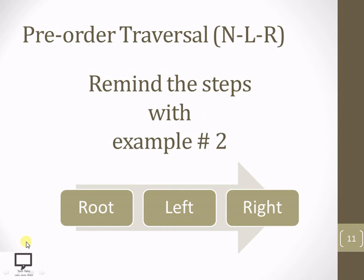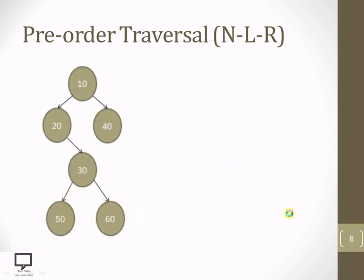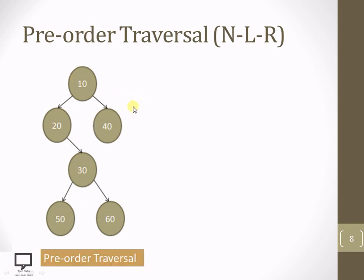Now let's move to Example 2. Again, reminder of steps: first process the root node, then go for the left subtree, then the right subtree. This is the example already explained in detail in the previous video — the link has been provided. Here I am explaining the same example but in short. Let's start with the root node.